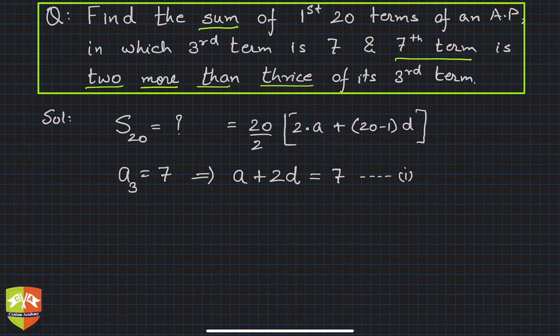The seventh term is two more than thrice the third term. So a_7 is given by: equals 2 more than, so plus, thrice the third term, so 2 plus 3 times a_3. This is the second equation. So let's try and solve. Now a_3 is given as 7.